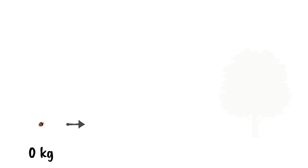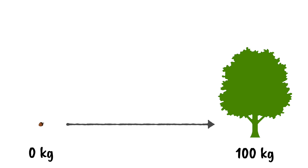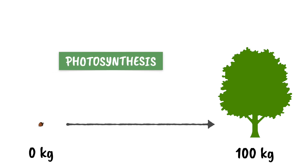Picture planting the seed of a tree. So we have zero kilograms of tree at this point. Fast forward in time, and we've got a big tree that's now 100 kilograms. So where did that matter — that 100 kilograms of tree — actually come from? Well, you may know that this is all through photosynthesis.